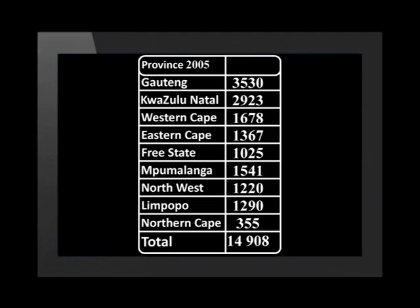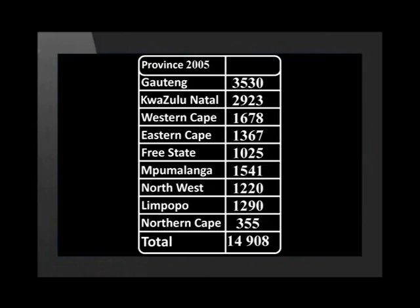Now let's look at the table and determine which province will have the highest car insurance premiums. Gauteng has the highest number of accidents, so it should have been the province with the most expensive car insurance premiums. Take a moment to decide which province was the safest to drive in. The Northern Cape had the lowest number of fatal accidents.